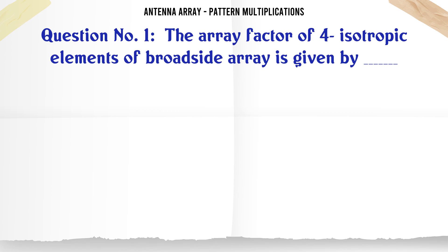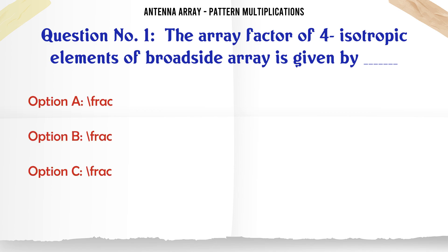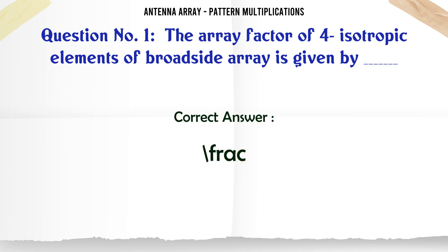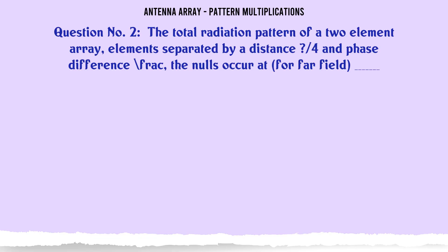The array factor of four isotropic elements of a broadside array is given by: A. Fraxen 2 gtcos 2 gtcos, B. Fraxen 2 gtcos 2 gtcos, C. Fraxen 2 gtcos 2 gtcos, D. Fraxen 2 gtcos gtcos. The correct answer is Fraxen 2 gtcos 2 gtcos.